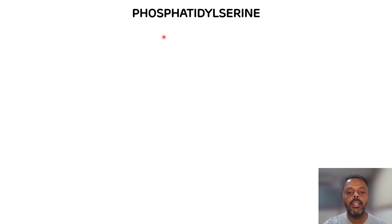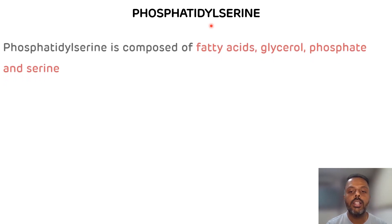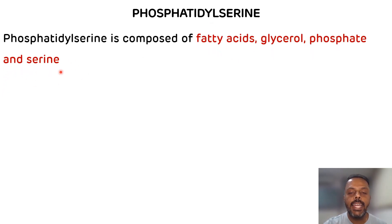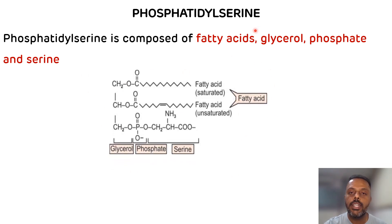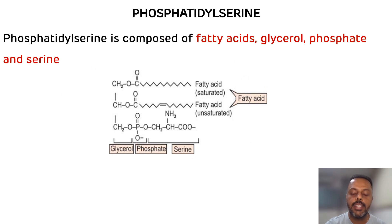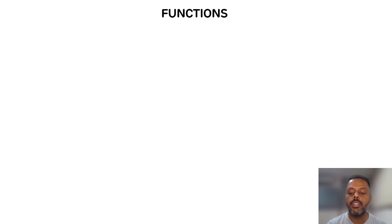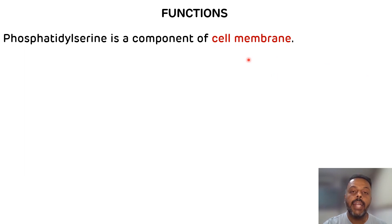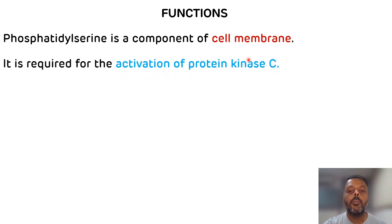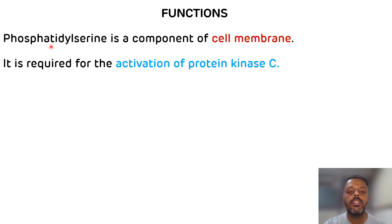The third glycerophospholipid is phosphatidylserine. The composition of phosphatidylserine includes glycerol, fatty acids, phosphate, and serine as a nitrogenous base. You can see in the structure the presence of fatty acid, glycerol, phosphate, and serine. Phosphatidylserine plays an important role in the synthesis of cell membranes and also in the activation of protein kinase C, which acts as a second messenger.